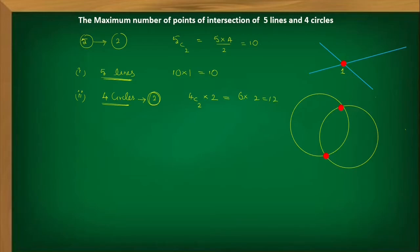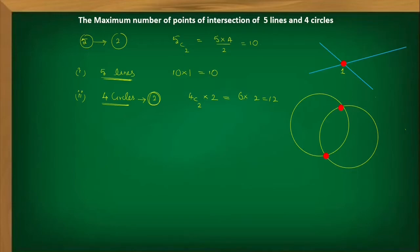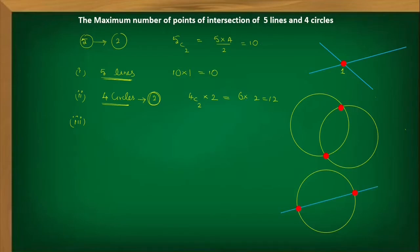It is not over yet, because we also need to consider the case when a line and a circle intersect. We want the maximum number of possible points, so we suppose that lines and circles also intersect. When a circle and a line intersect, you get two points of intersection — one line and one circle together gives two points.